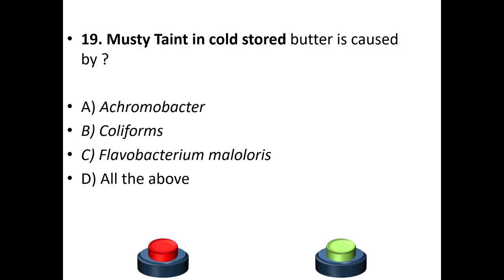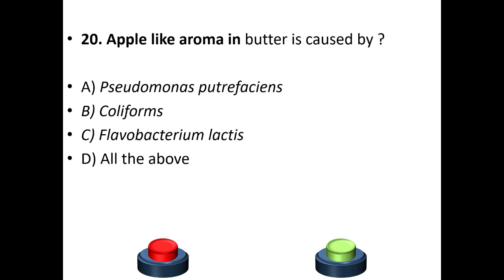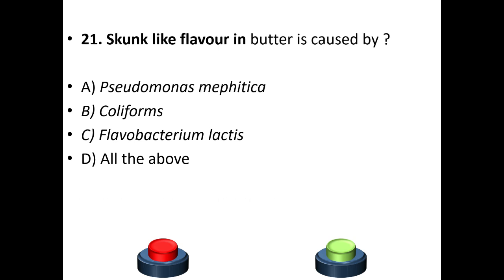Nineteenth question: mastitis taint in cold-stored butter is caused by A: Achromobacter. B: Coliforms. C: Flavobacterium malodoratum. D: All of the above. Answer is A — Achromobacter. Twentieth question: apple-like aroma in butter is caused by A: Pseudomonas putrefaciens. B: Coliforms. C: Flavobacterium malodoratum. D: All of the above. Answer is C — Flavobacterium malodoratum.